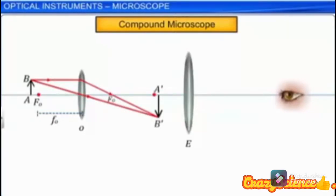If the position of the eyepiece E is so adjusted that A'B' lies between the optical center and the first principal focus, then a virtual and magnified final image A''B'' is formed.